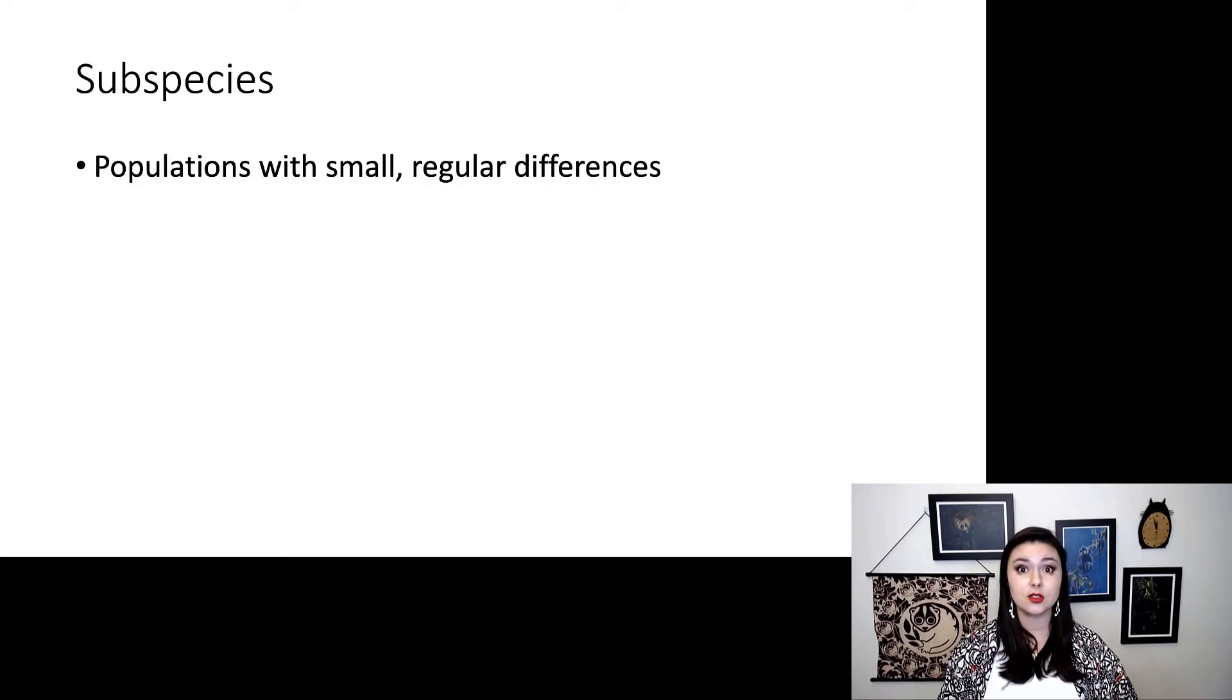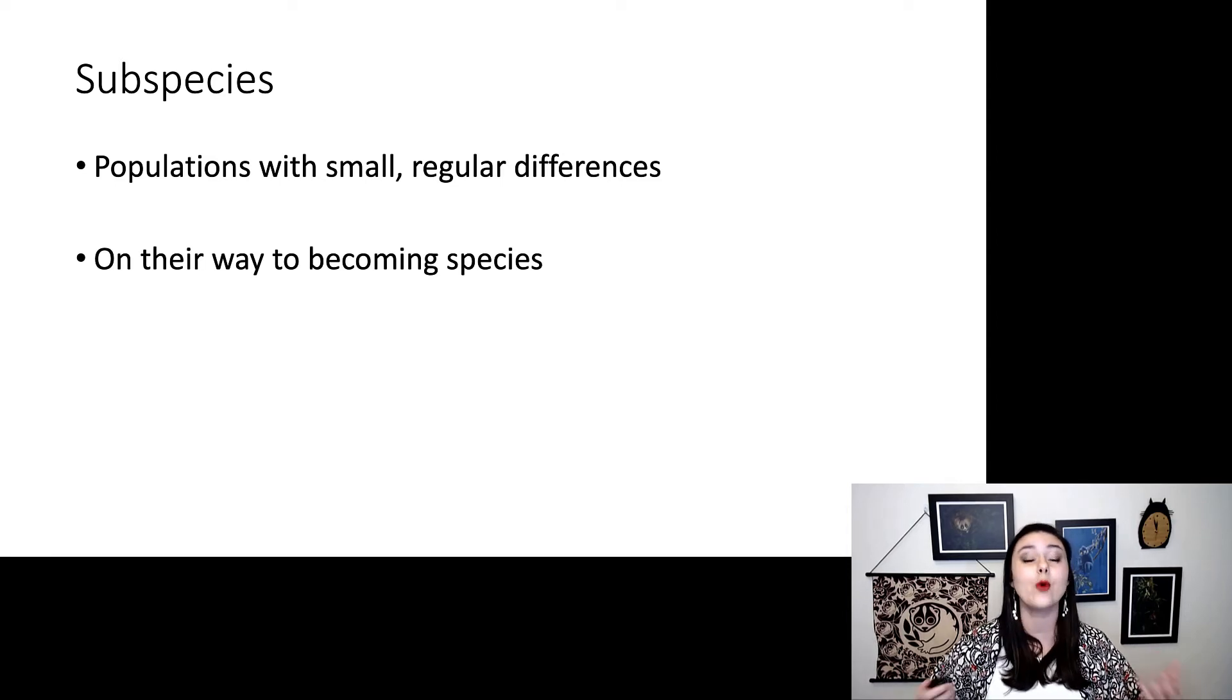So we do use the term subspecies for other species. And this just means populations with small, regular differences. So these different populations are on their way to becoming species. Because remember, with Darwin, it's these subpopulations where it's really going on. It's the variation within a species where evolution is happening. And that's what's most interesting.